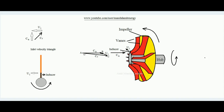Now we will learn how to construct the velocity triangles of a centrifugal compressor. Velocity triangles are the graphical representation of the velocity of air in connection with the tangential velocity of the rotor at inlet and exit. When the rotor rotates, at various points there is an associated tangential velocity.